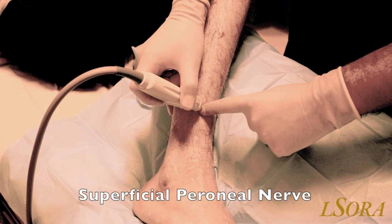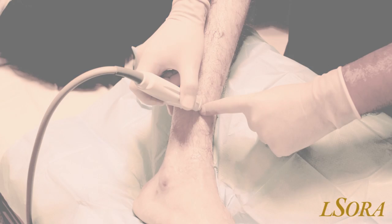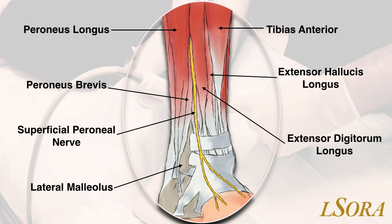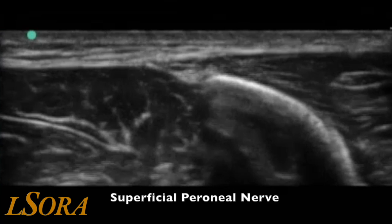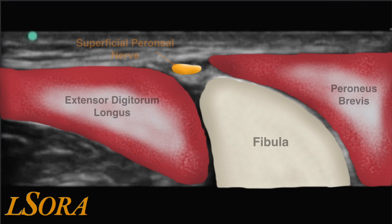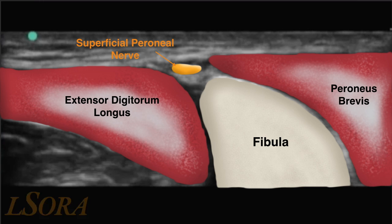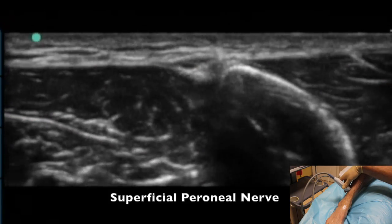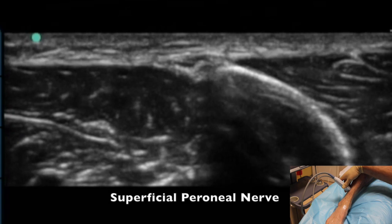We will now cover the superficial peroneal nerve. Examining the anatomy at the lateral aspect of the ankle, you will see the lateral malleolus, and posteriorly the muscles of peroneus longus and brevis, and anteriorly the muscle of extensor digitorum longus. The superficial peroneal nerve passes between those muscles, and as we ascend up the leg, it dives deep between peroneus longus and brevis. The probe is moved to the lateral aspect of the ankle. You will identify the fibula, pointing to a hyperechoic structure sandwiched between extensor digitorum longus and peroneus brevis. The left-hand side of the screen is anterior, the right-hand side is posterior. As the probe is slid up and down the leg, you can follow the superficial peroneal nerve as it travels between the fascias.